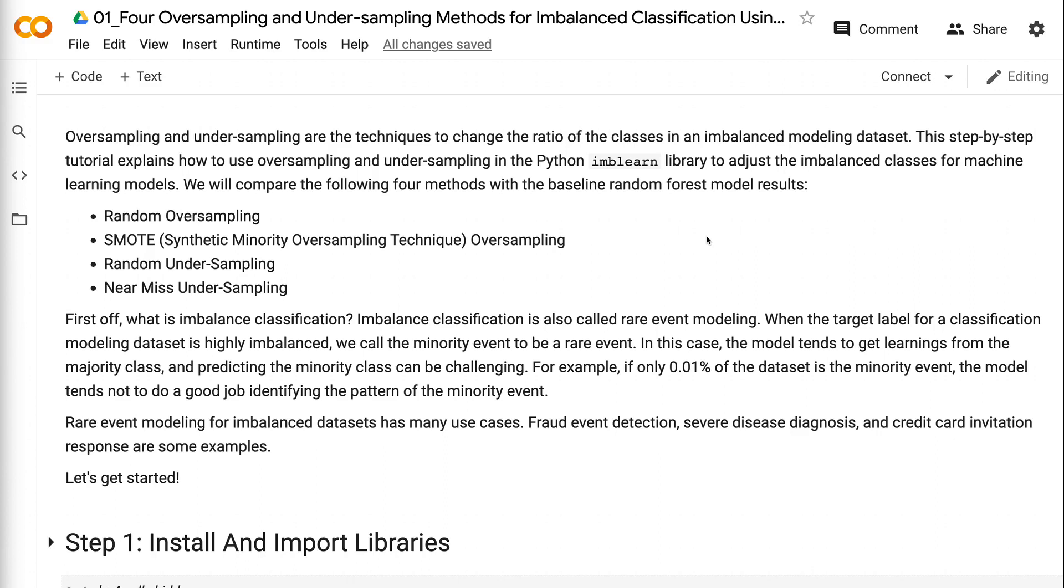For example, if only 0.01% of the dataset is the minority event, the model tends not to do a good job identifying the pattern of the minority event. Rare event modeling for imbalanced datasets has many use cases. Fraud event detection, severe disease diagnosis, and credit card invitation response are some examples.